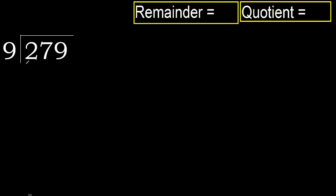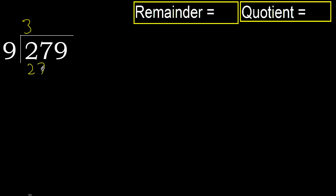279 divided by 9. 2 is less, therefore next. 27 is not less, therefore 9 multiplied by which number is nearest to 27 but not greater? 9 multiplied by 4 is greater, 9 multiplied by 3 is 27, not greater. Subtract, next.